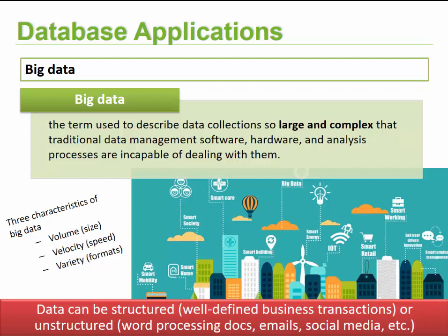Big data typically needs to follow three major characteristics — though some sources on the internet talk about eight characteristics. We're going to focus on the top three: volume, velocity, and variety. Volume comes down to the size of the actual database, which typically depends on the number of records we write into it. If you think about your cell phone contact list, that would be a very small database with roughly 30 to 40 contacts.